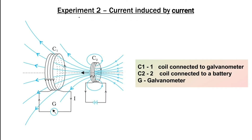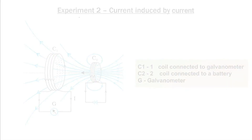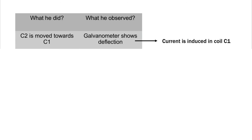In experiment two, he considered two coils, C1 and C2. Coil C1 is connected to a galvanometer (G), and coil C2 is connected to a battery. The coils C1 and C2 are placed such that they have a common axis. Because of the battery connection, coil C2 produces a steady magnetic field around it.